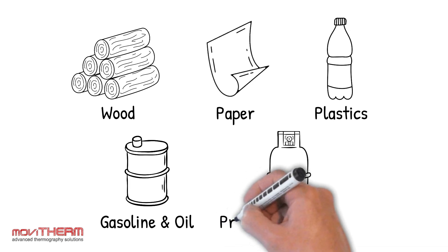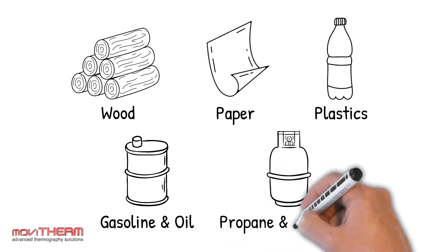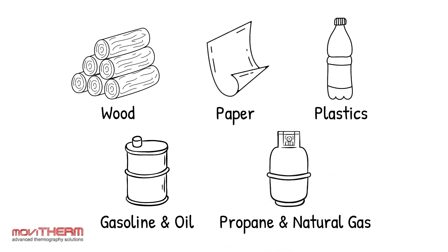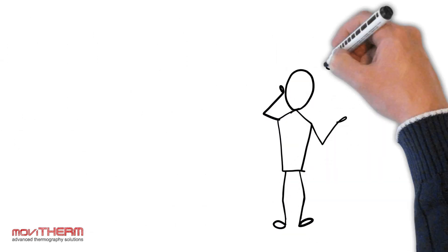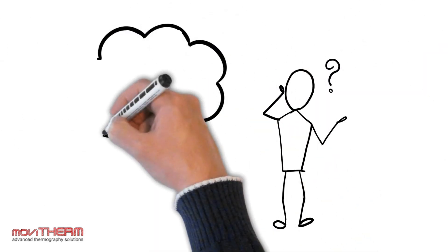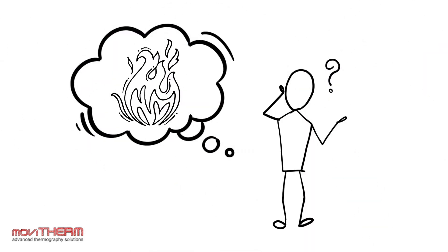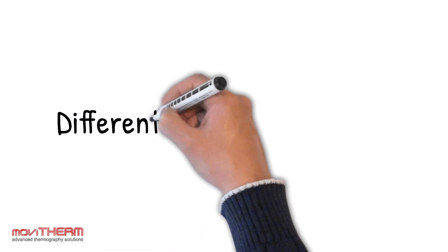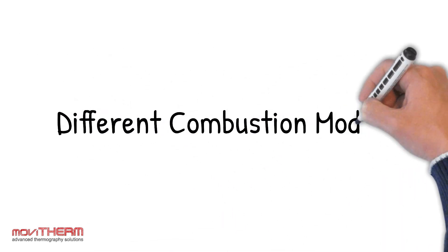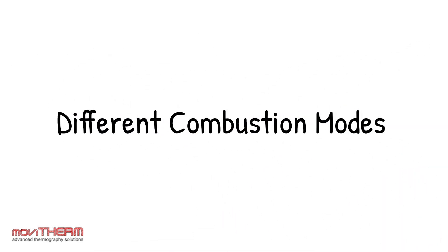Gaseous materials such as propane and natural gas can also catch fire. Each type of material has different characteristics that can affect how they burn, and it's essential to understand these differences to prevent fires from occurring. Next, let's talk about the different combustion modes of these materials.